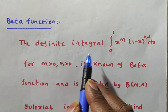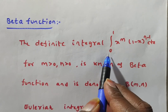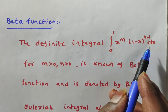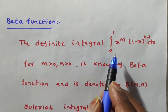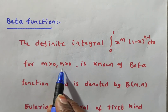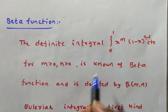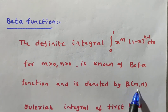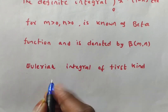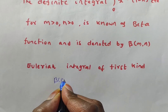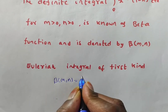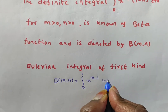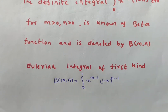The Beta function is defined as the definite integral from 0 to 1 of x to the power of m minus 1 times (1 minus x) to the power of n minus 1 dx, and this is called Beta(m, n), where m and n are both non-negative. We denote it as Beta(m, n) = integral from 0 to 1 of x^(m-1) * (1-x)^(n-1) dx.